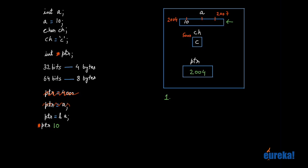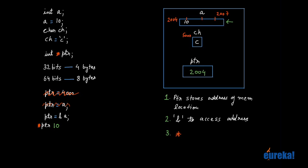So now you've learned three concepts. ptr is a pointer variable that can store an address of some memory location. To get the address of some variable, you use the ampersand symbol — so ampersand A gets me the address of variable A and I can store that in ptr. And finally, if I want to access what is stored in that memory location, I say star ptr. So star ptr would dereference ptr. ptr alone is the address 2004, and star ptr goes to address 2004 and gets whatever is stored there, which is 10. Pointer variables are exactly the same as any other variable — integer variable A stores 10, character variable ch stores 'c', and pointer variable ptr stores address 2004.